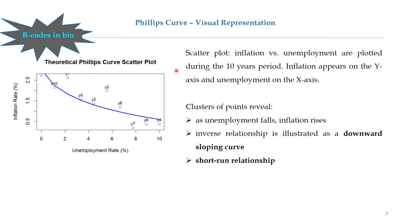This is a theoretical Philips Curve scatterplot with inflation on the y-axis and unemployment on the x-axis. The Philips Curve represents a short-term relationship, illustrated here with only 10 years of data points. The inverse relationship is manifested in the downward sloping curve, signifying that as unemployment falls, inflation increases.